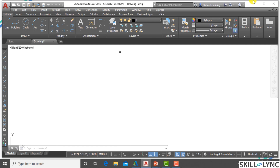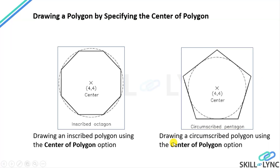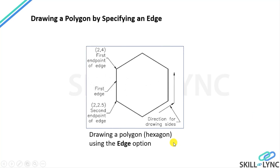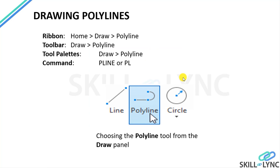In the next session, we will be covering some interesting tools. We have covered the circle method and the edge method — drawing a polygon by specifying an edge. The first edge point could be 2,4 and the second 2,2.5, or you can use relative coordinates. You can see the polygon is created in the anti-clockwise direction. Next, we will be talking about polylines.